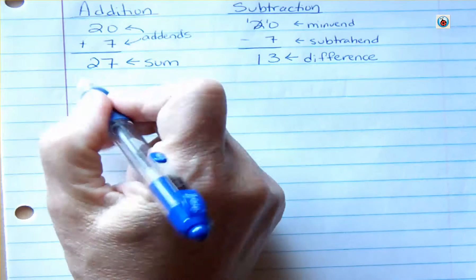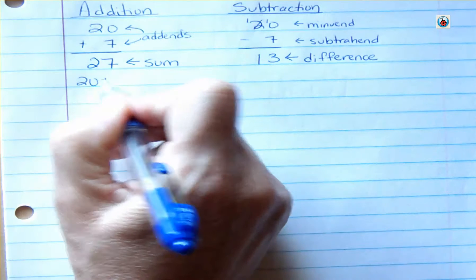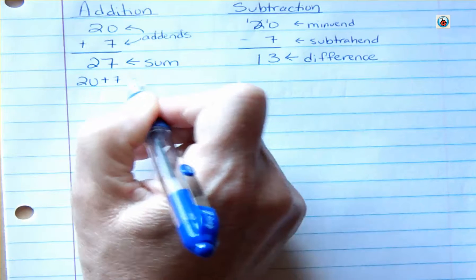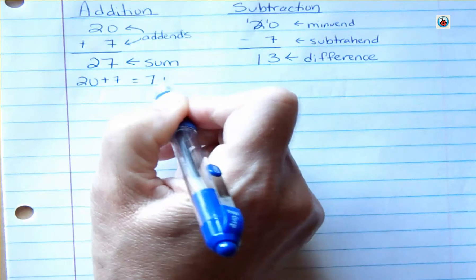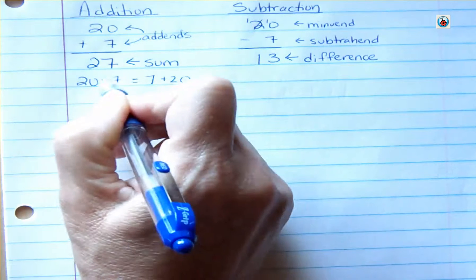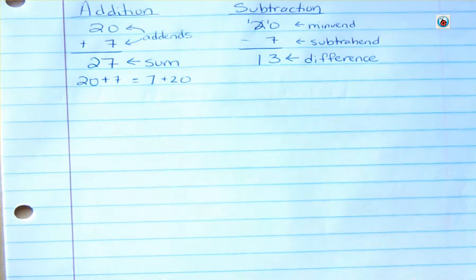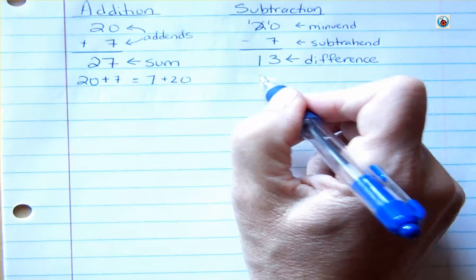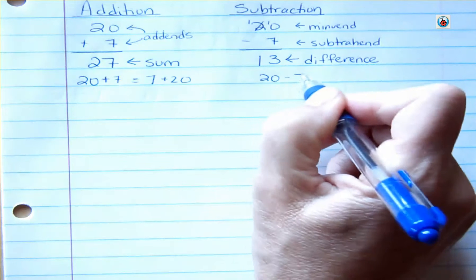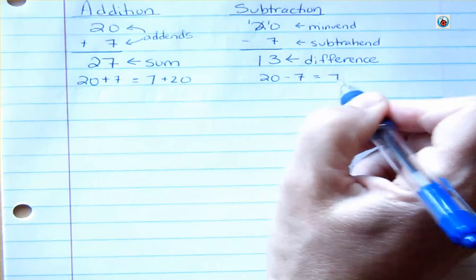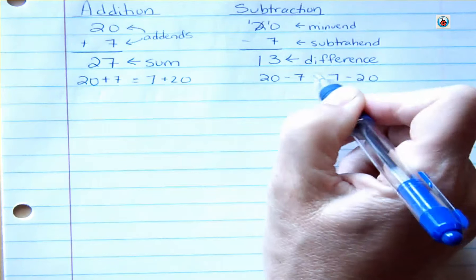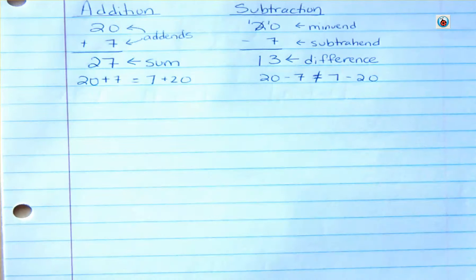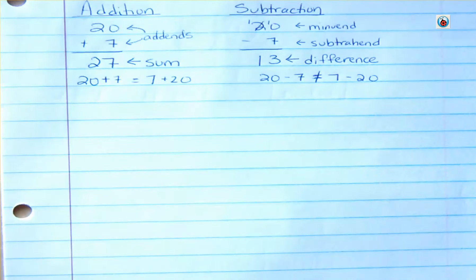So, in addition, we could say 20 plus 7 equals 7 plus 20, right? Those two things can be flip-flopped. That's the commutative property. But we can't do that. We can't say 20 minus 7 equals 7 minus 20. That, in fact, does not equal. We put the little slash through there. So we have to give them different names because it depends on whether they're first or second.